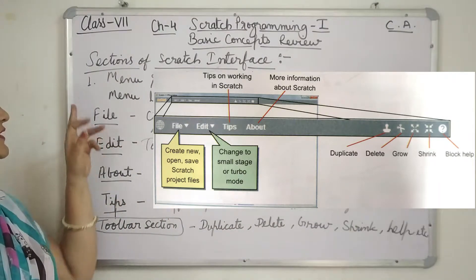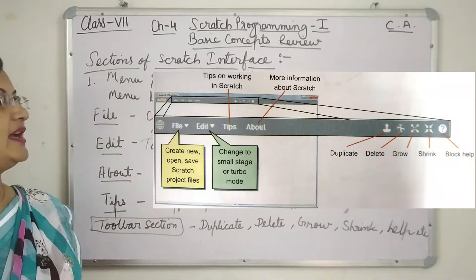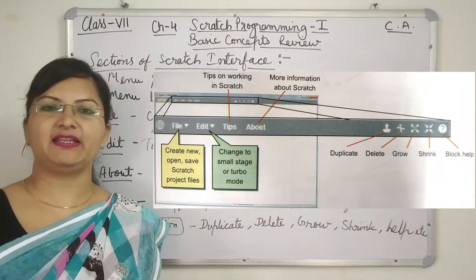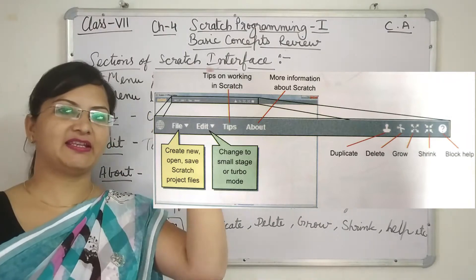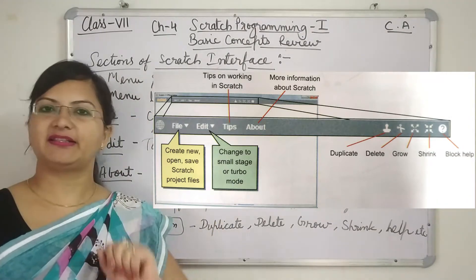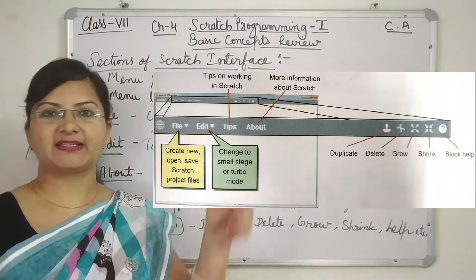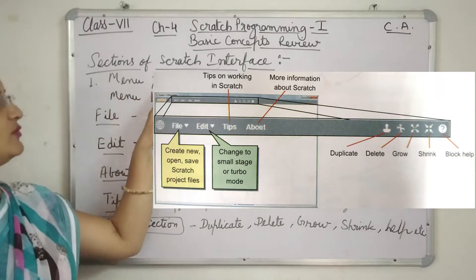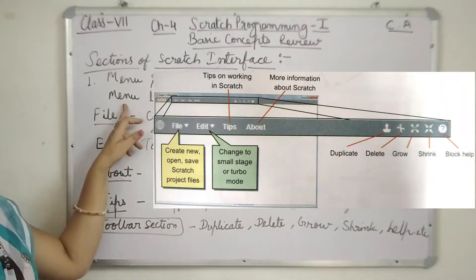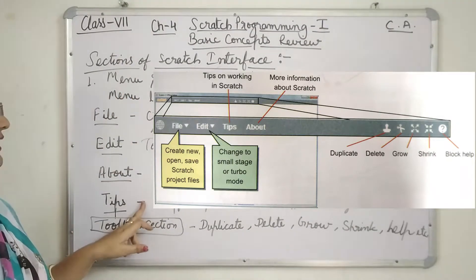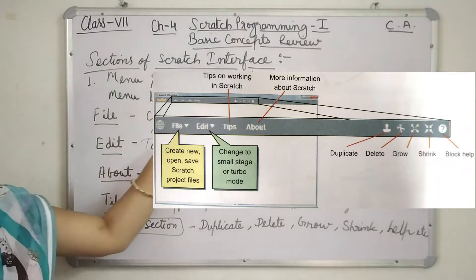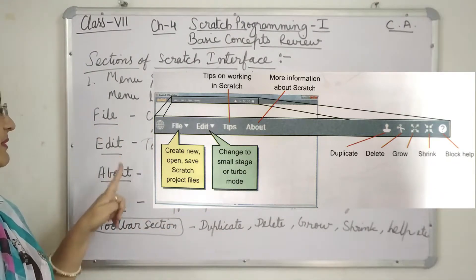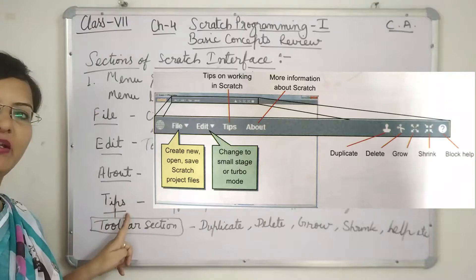First of all, there is the Menu and Toolbar at the top. Just as in all software, there are menus, icons and buttons at the top. In the Menu Bar we have four menus: File Menu, Edit Menu, About Menu, and Tips Menu.